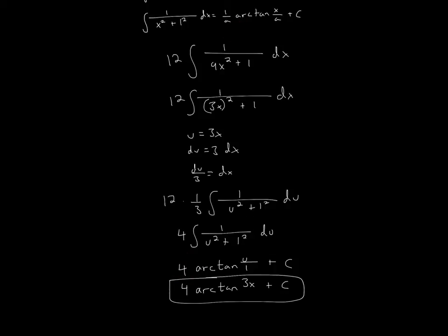One over a, where a is 1, so one over a is just 1. That's why it's 4 times 1, which is 4. Then arctan of u over 1, which is x over a. That's why u has to be changed to x. We can't leave it in this form. Then plus C.